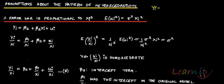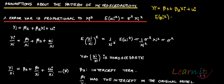We have the original model: yi equals beta 1 plus beta 2 xi plus ui. What we are saying is that this error variance is given by ui squared, and ui squared equals sigma squared xi squared. If this is the case, what you do is divide the entire model by xi, giving yi over xi equals beta 1 over xi plus beta 2 plus ui over xi.